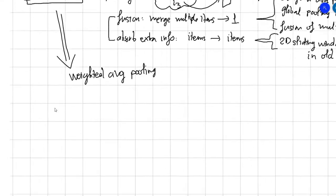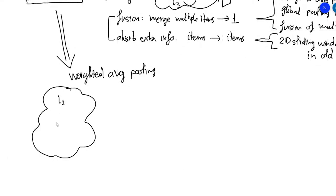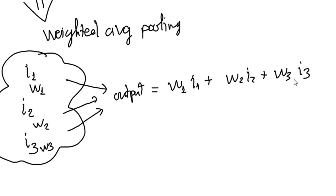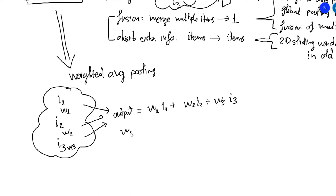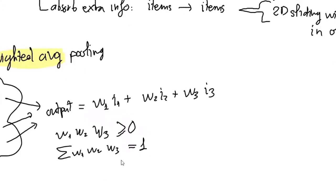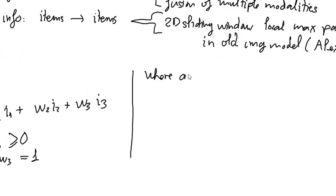Attention is actually a special pooling operation — it is a weighted average operation. Say you have the input as a set of items i1, i2, and i3, and an additional input: the weight of each item, w1, w2, and w3. Then attention is calculated as w1 × i1 + w2 × i2 + w3 × i3 — the weighted sum of the input items, where the weights are positive and sum to one, making them a probability mass distribution. That's why it's called the weighted average, and you can think of w as the attention given to each item.